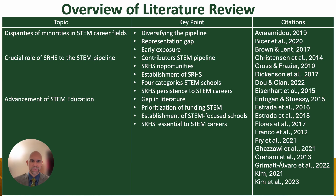Overview of literature review: I organized my literature into five parts — disparities of minorities in STEM career fields, the crucial role of STEM residential high schools to the STEM pipeline, advancement of STEM education, STEM identity formation, and early access and exposure to STEM. My overview demonstrates the need for my problem of practice research and how it contributes to the scholarly conversation.